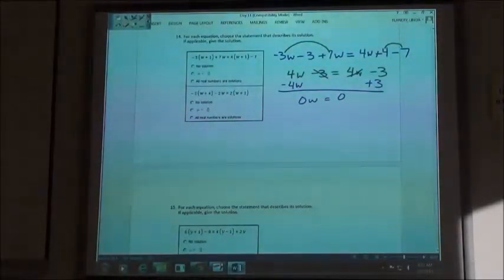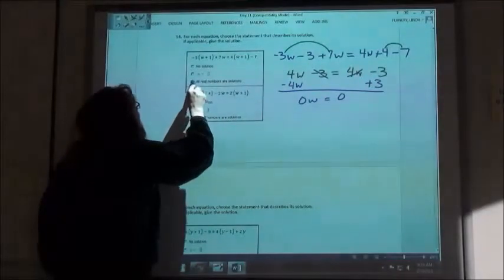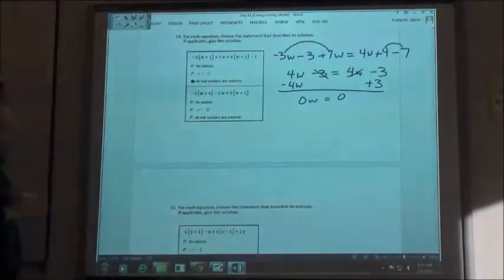All real numbers. All real numbers. Because I can take 0 times 1, 0 times 2, 0 times 586. And I'm still going to get 0, right? 0 times every number in the world is still 0.